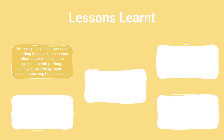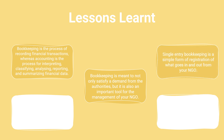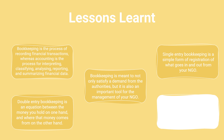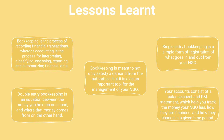To conclude this sub-module, let us summarize the lessons learned. Bookkeeping is the process of recording financial transactions, whereas accounting is the process of interpreting, classifying, analyzing, reporting, and summarizing financial data. Bookkeeping and accountancy are meant not only to satisfy demand from the authorities, but are also an important tool for the management of your NGO. Single-entry bookkeeping is a simple form of registration of what goes in and out of your NGO. Double-entry bookkeeping is an equation between the money you hold on one hand and where that money comes from on the other. Your accounts consist of a balance sheet and a P&L statement, which help you track the money your NGO has, how they're financed, and how they change in a given time period.